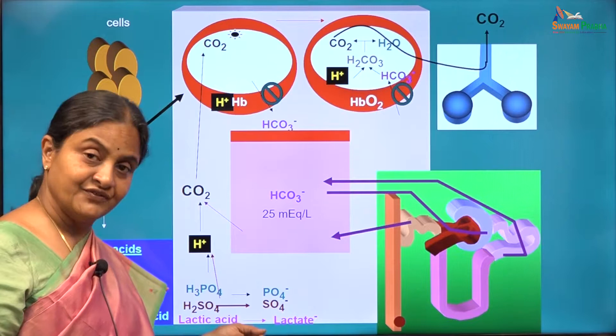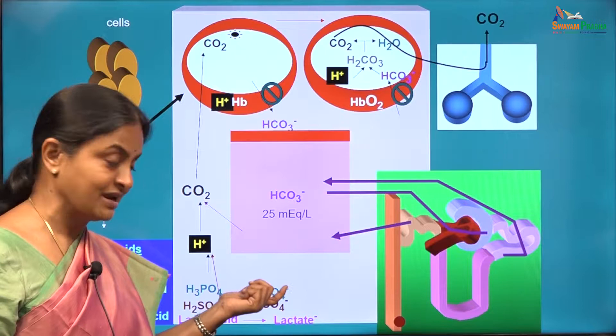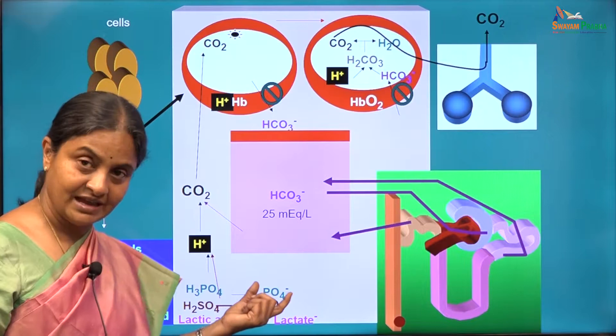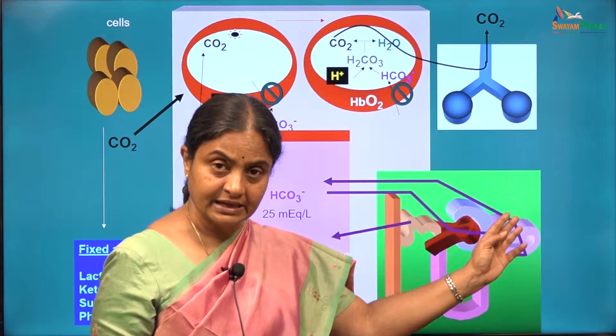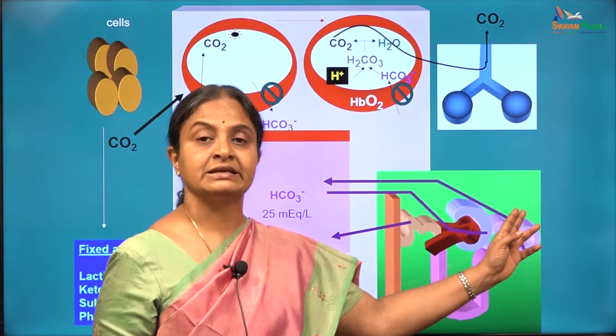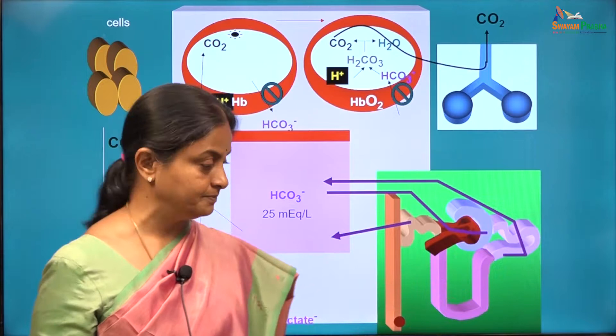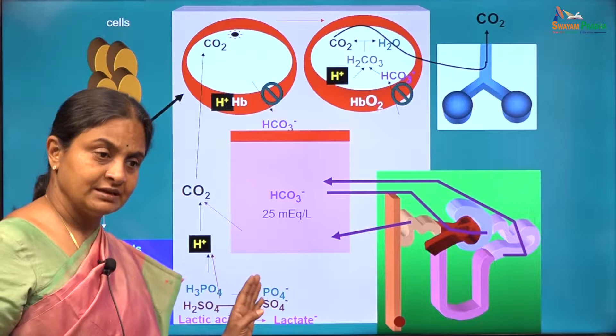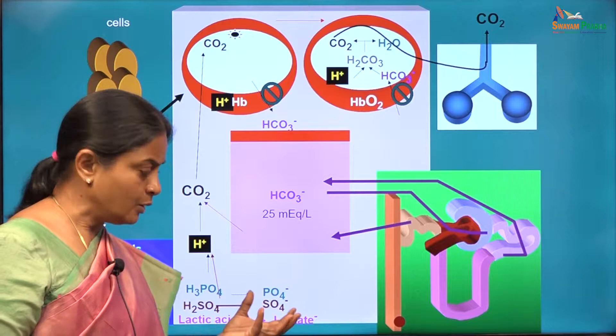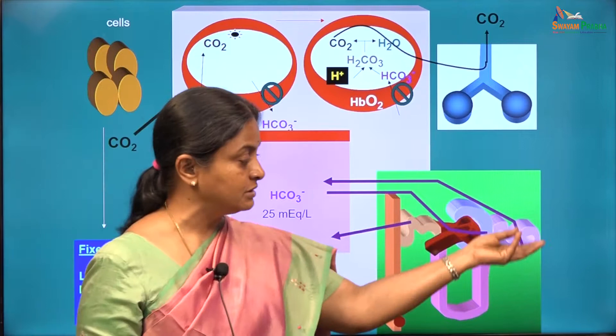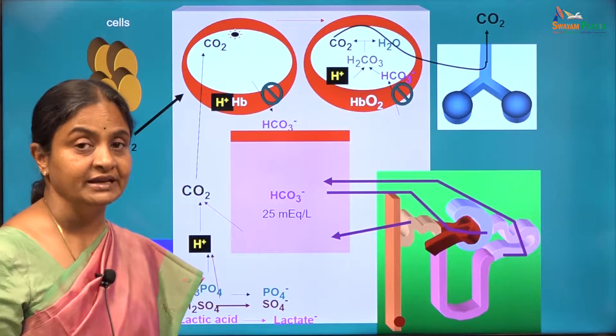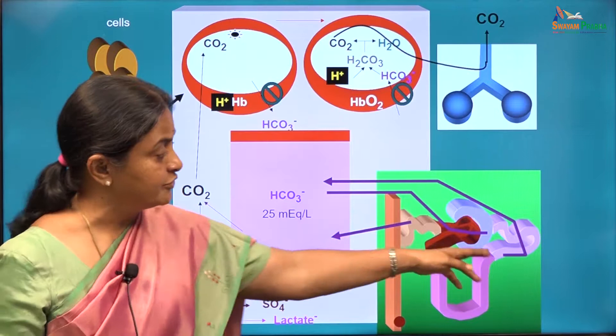One word of caution: phosphate is different from the other fixed acid anions because there is another important source of phosphate coming into blood — from bone resorption and also dietary phosphate. So phosphate levels are fairly higher, and phosphate is also reabsorbed in the proximal tubule. Reabsorption of phosphate in the proximal tubule is regulated by parathyroid hormone. If you think of phosphate differently from the rest of the fixed acid anions, we can group all fixed acid anions together and say they go out unreabsorbed, and that function is important for maintaining plasma bicarbonate levels.